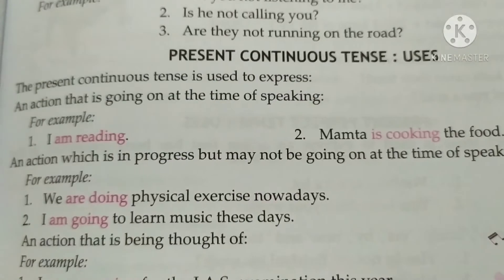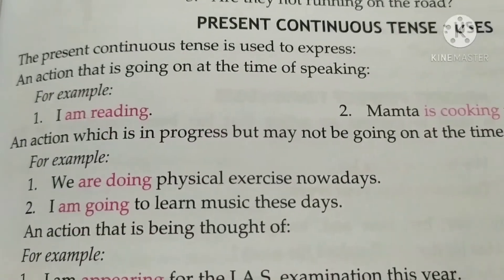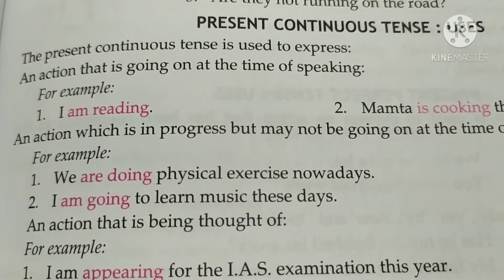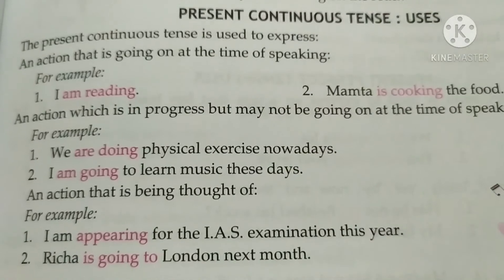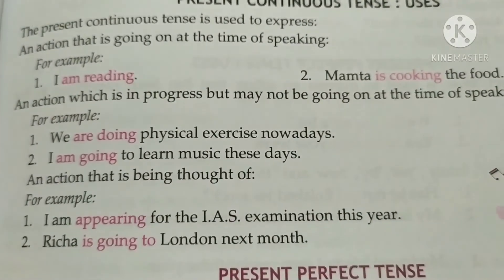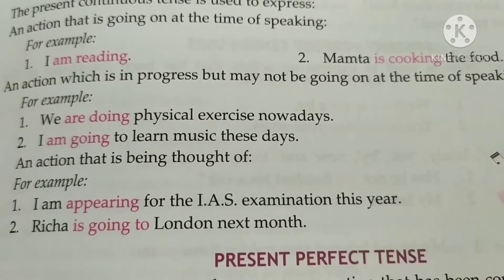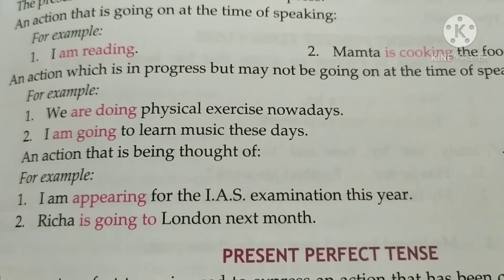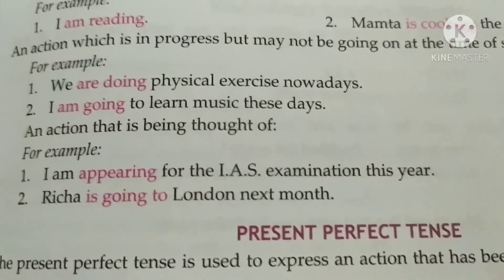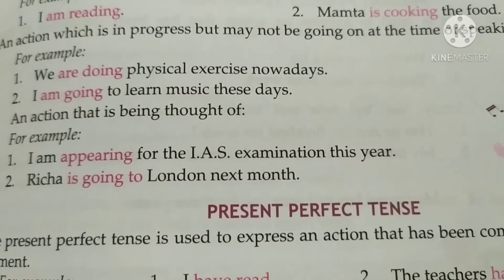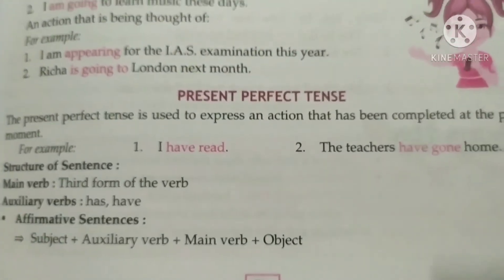Present continuous tense uses: It is used to express an action that is going on at the time of speaking — 'I am reading,' 'Mamta is cooking the food.' Also for an action in progress but not necessarily happening at the moment of speaking — 'We are doing physical exercise nowadays,' 'I am going to learn music these days.' Also for a planned future action — 'I am preparing for my examination this year,' 'Richard is going to London next month.'